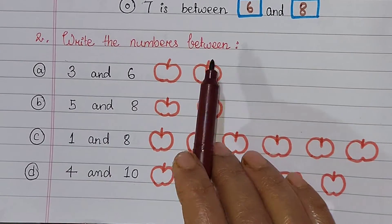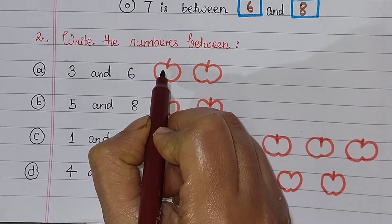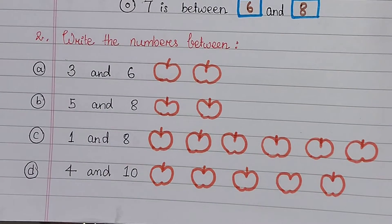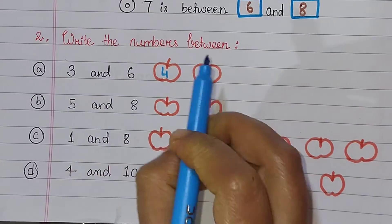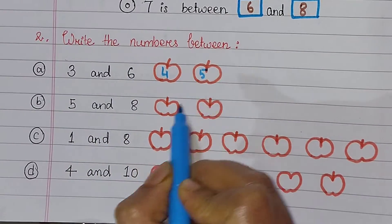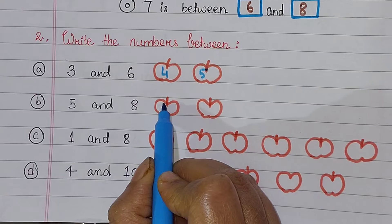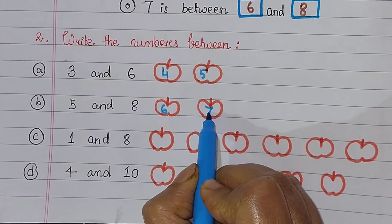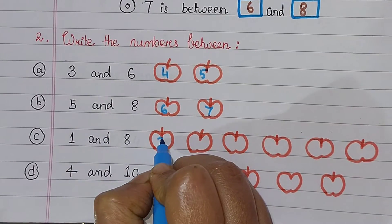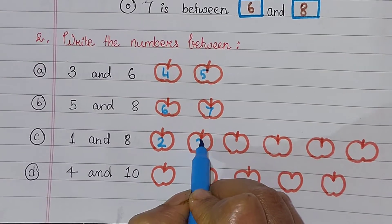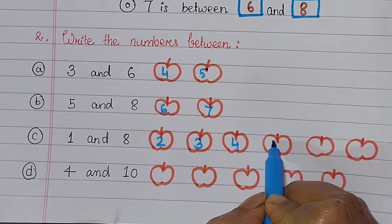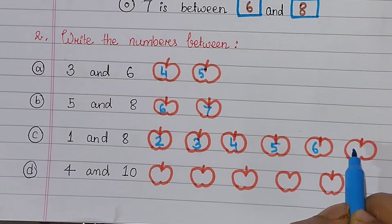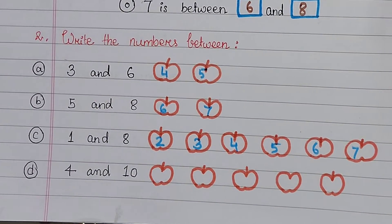Write the numbers between 3 and 6. Between the numbers are 4 and 5. Next, 5 and 8. Between the numbers are 6 and 7. 1 and 8. Between the numbers are 2, 3, 4, 5, 6, 7. 4 and 9.